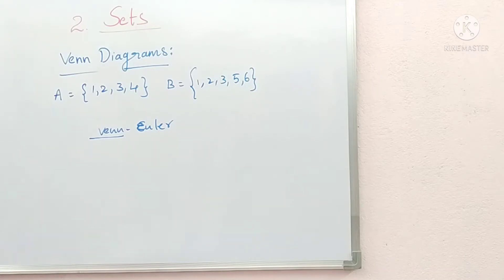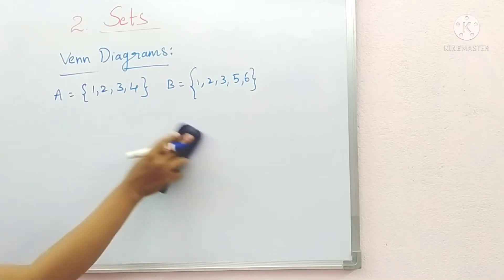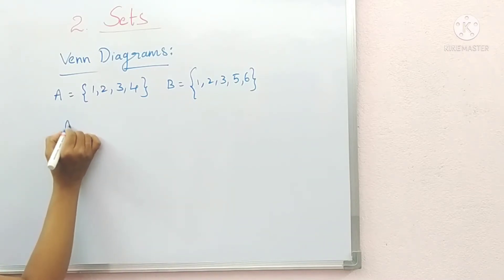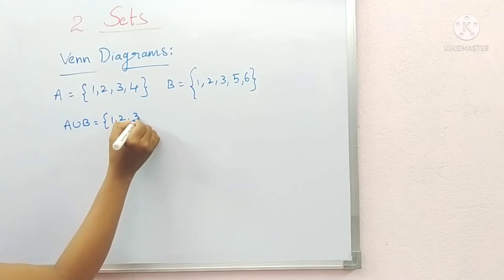Here, set A contains 1, 2, 3, 4 elements and set B contains 1, 2, 3, 5, 6 elements. First, A union B. Write set A {1, 2, 3, 4} union set B {1, 2, 3, 5, 6}.